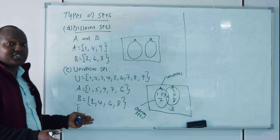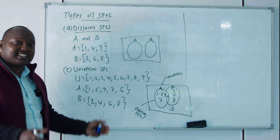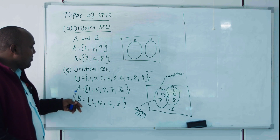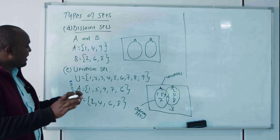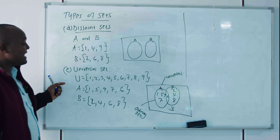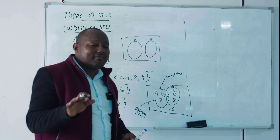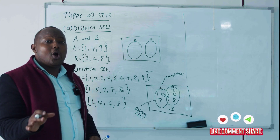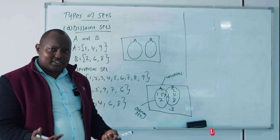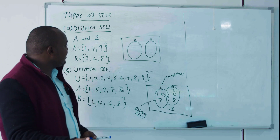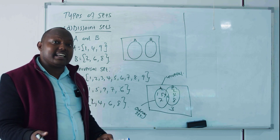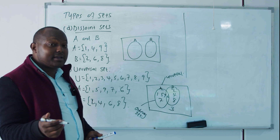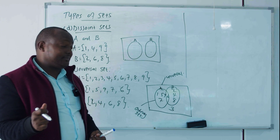The universal set is the set under consideration. For example, in a university it could be all students taking sciences — engineering students, BSc students — that whole group is the universal set. That marks the end of our first video on the introduction to sets. In the next video we shall look at set operations: union, intersection, and the symmetric difference and complement of a set. Thank you for watching, and keep subscribing so we can simplify mathematics together.